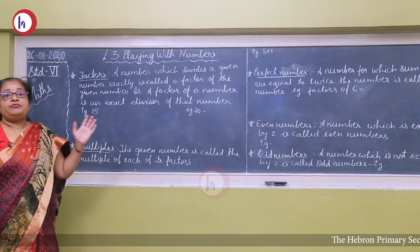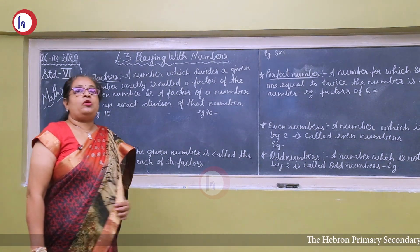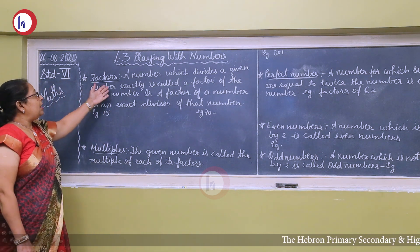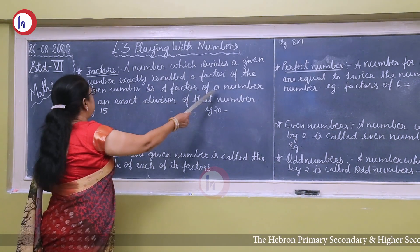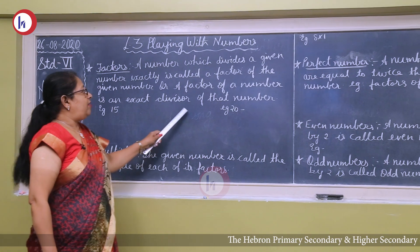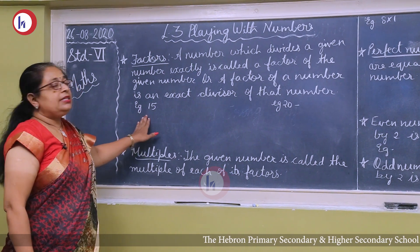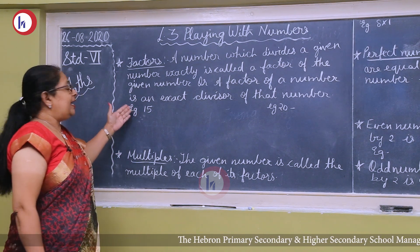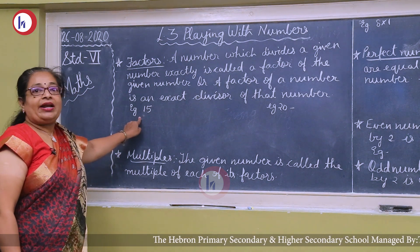In this chapter, first we'll start with factors and multiples. Factors and multiples you have already studied in your earlier classes, so we'll just go through it. A number which divides a given number exactly is called a factor, or a factor of a number is an exact divisor of that number. In simple words, suppose I take the example of 15 — whichever tables 15 appears in, that table number is known as a factor of the given number.